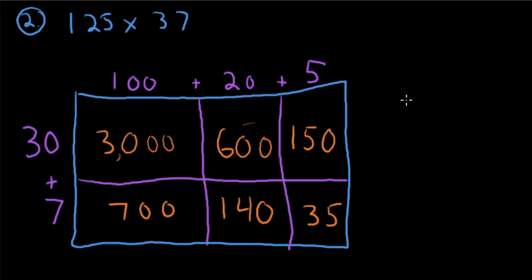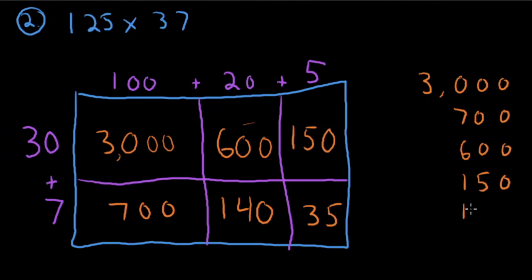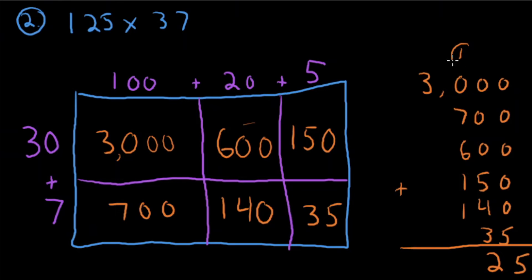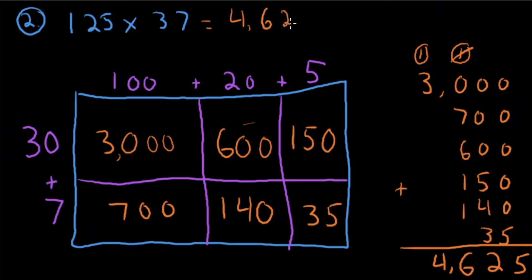Now add all of the partial products to get the final answer. We've got 3000, 700, 600, 150, 140, and 35. Line up your place values carefully. Ones: 5. Tens: 9 — that's 12, regroup. Hundreds: 13-14-15-16, regroup. Thousands: 4. Area model gives us an answer of 4625.